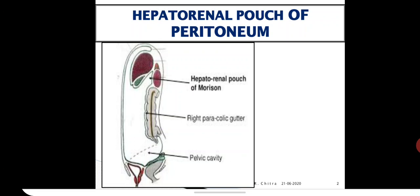To summarize: in front is the inferior surface of the right lobe of the liver; behind is the anterior surface of the right kidney, with the suprarenal gland above and the right colic flexure below. The superior boundary is the inferior layer of the coronary ligament. Below, it communicates with the greater sac. On the right side, it is limited by the diaphragm.